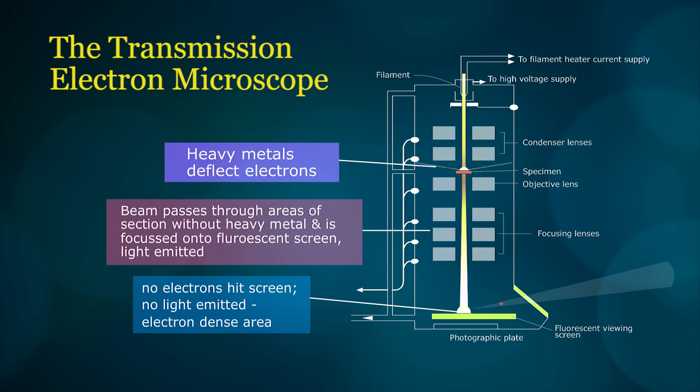To stain the sections, the grid is lowered onto a drop of uranyl acetate solution, washed, then stained with lead citrate.